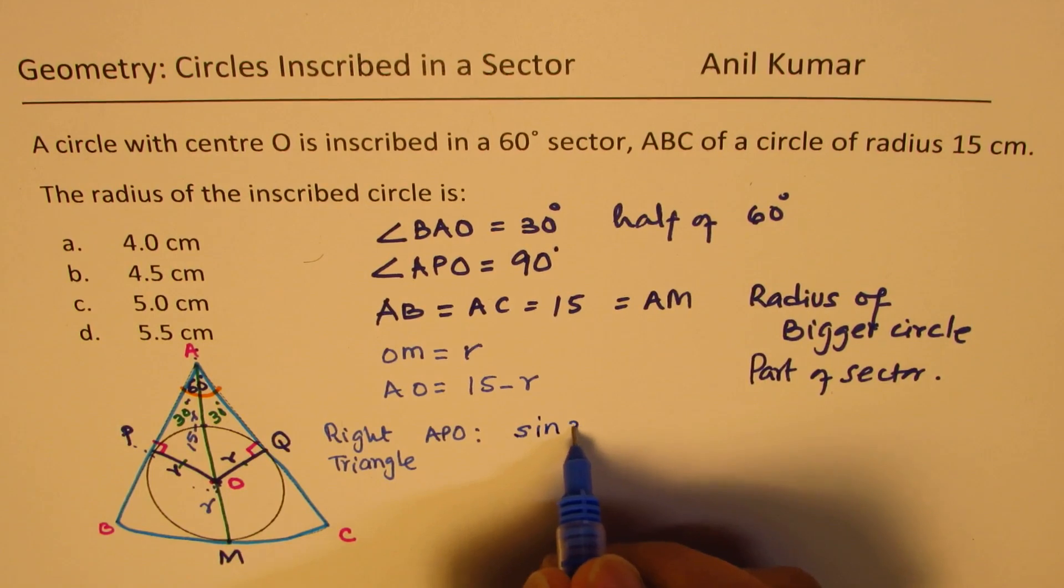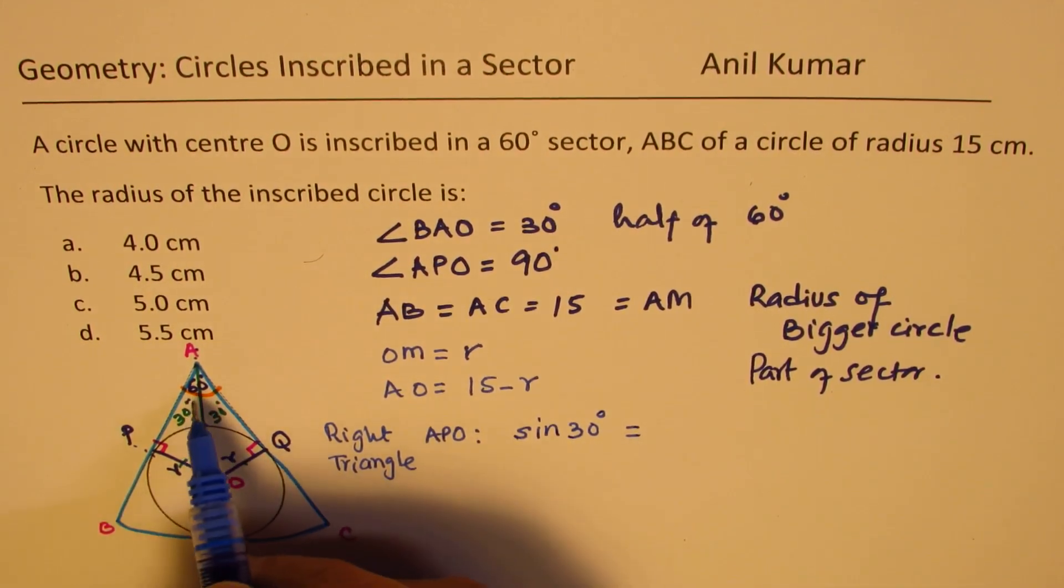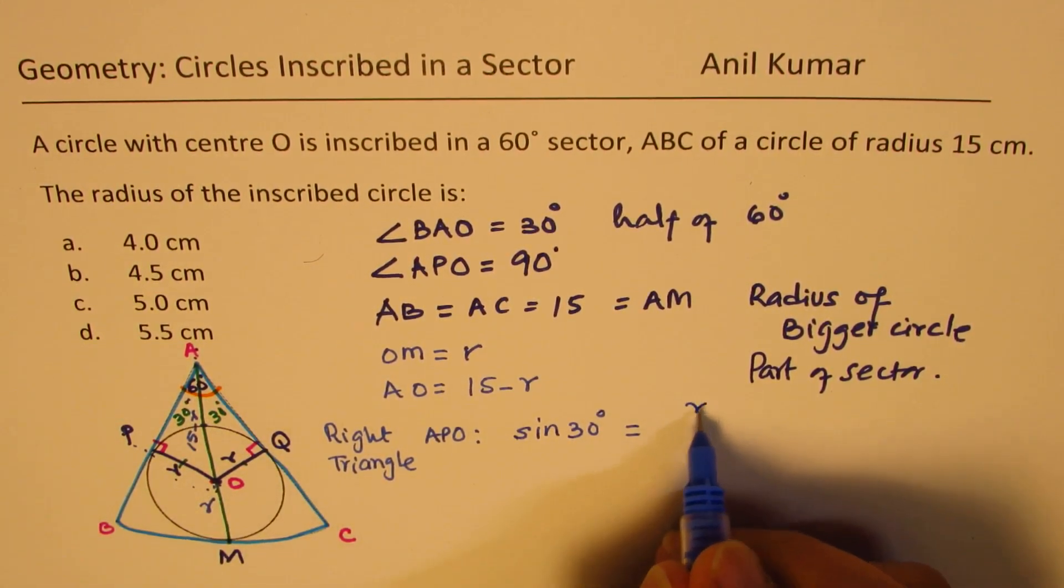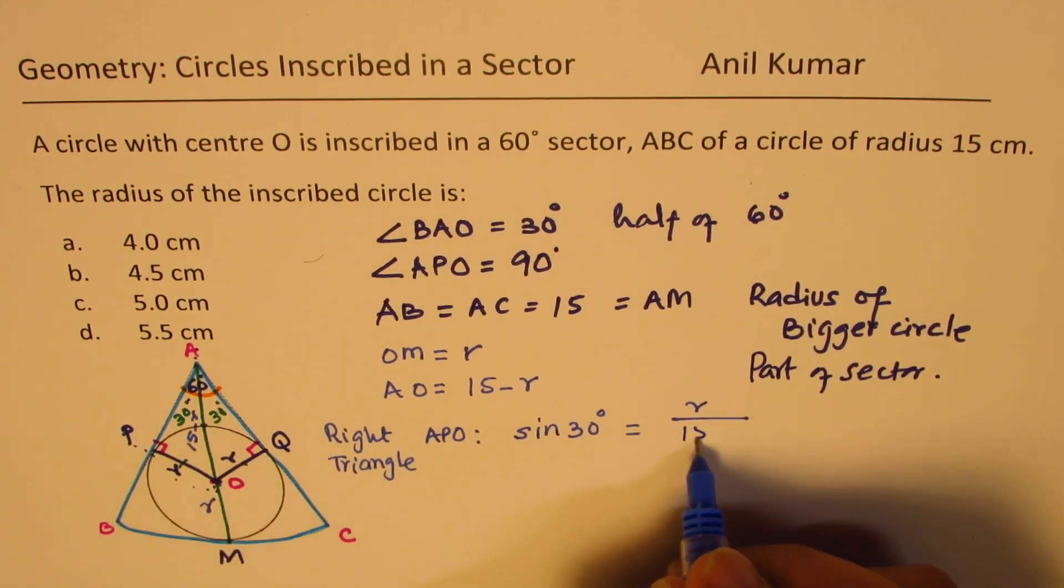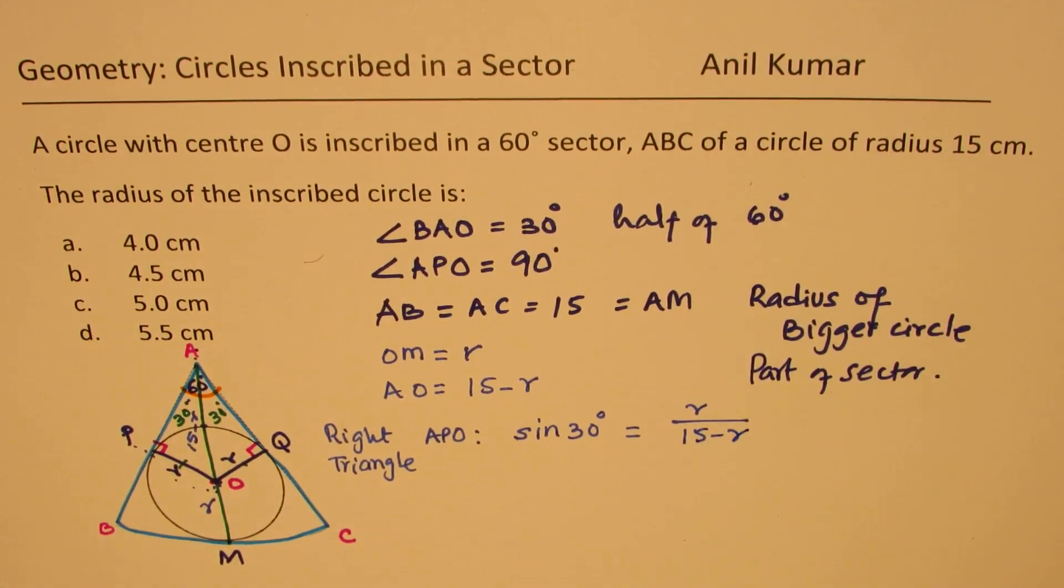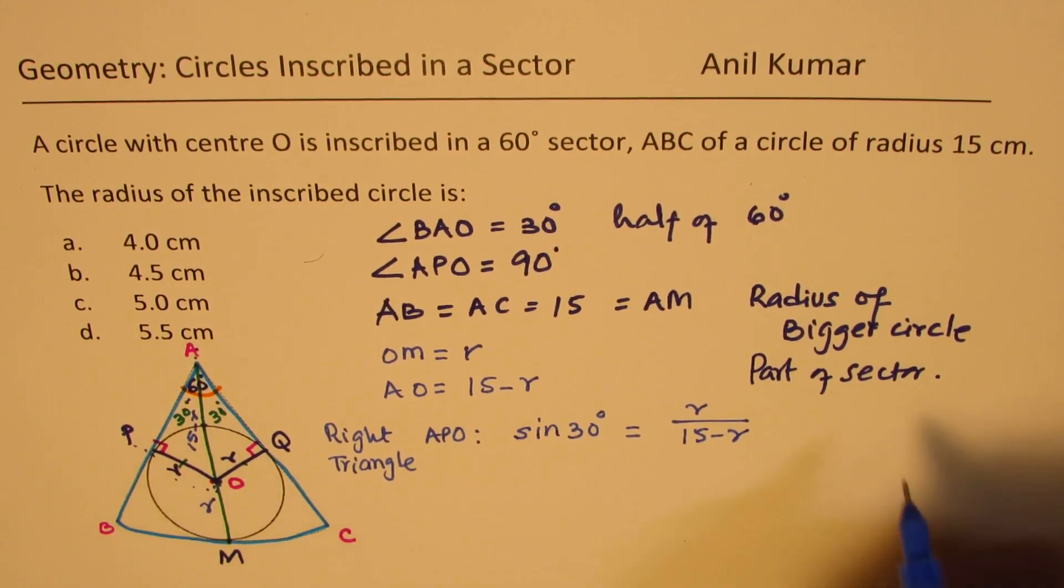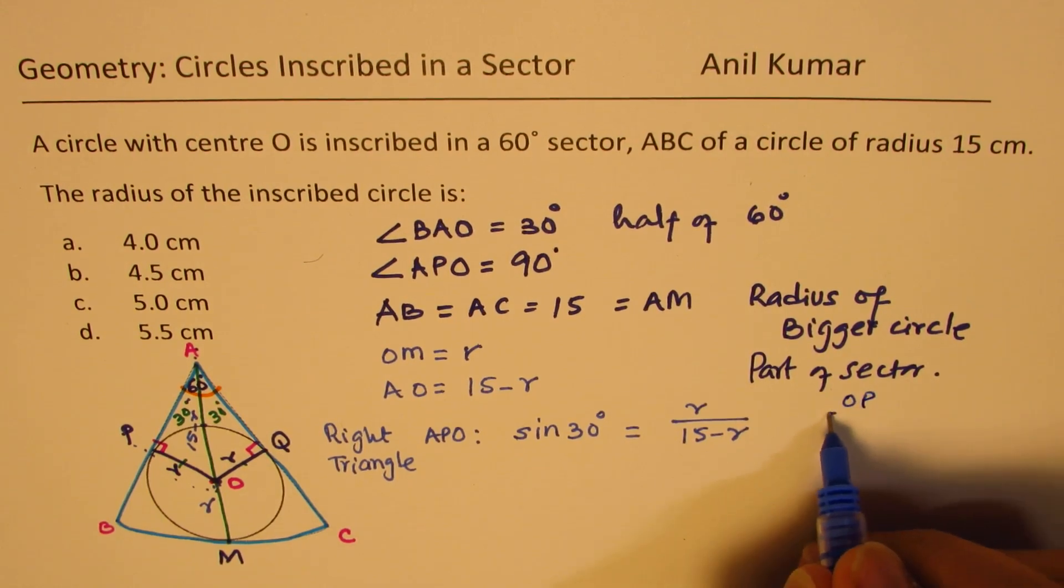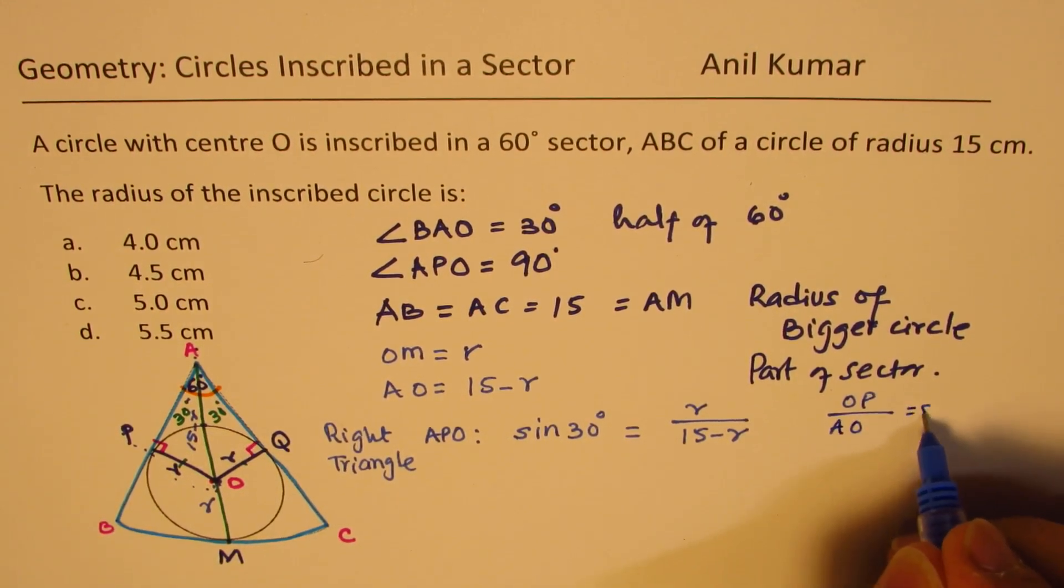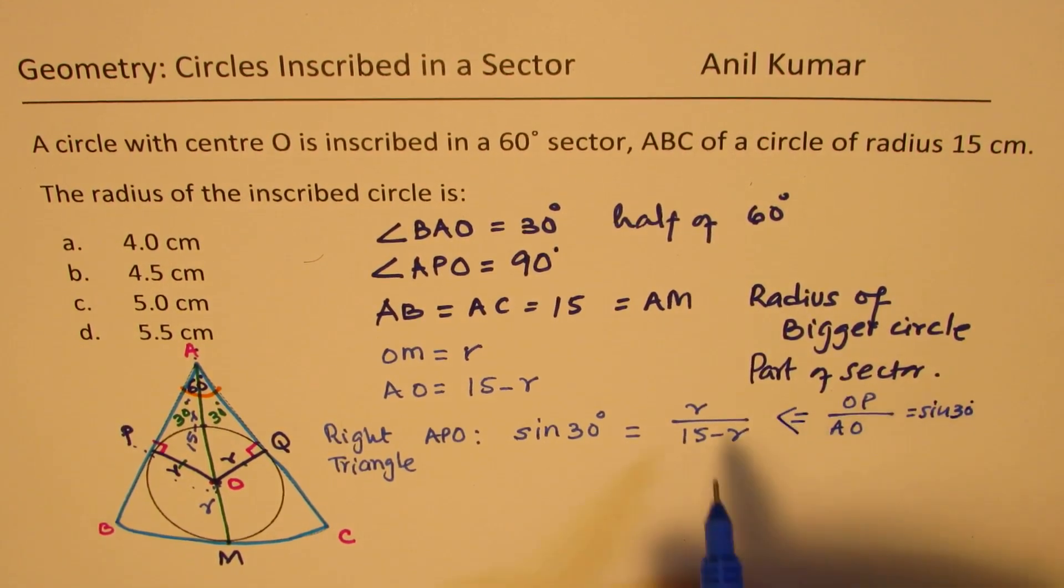So here, sine of 30 degrees is equal to R over 15 minus R. So basically, it is OP over AO, which is sine of 30 degrees. So you get this.